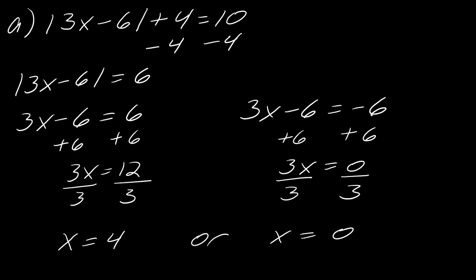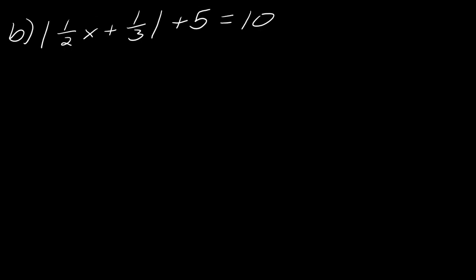So moving on to this one. So we will have to play around with the fractions a little bit. But the first thing is first. It's still the same first step, right? So first I have to just subtract off that 5. So now I get this 1 half x plus 1 third equals 5. And now I can split it off into its cases.